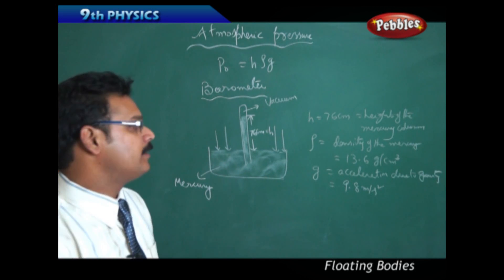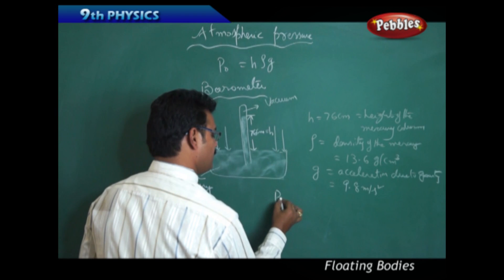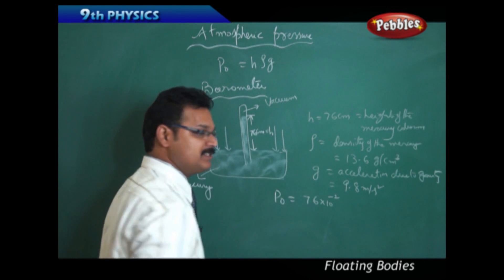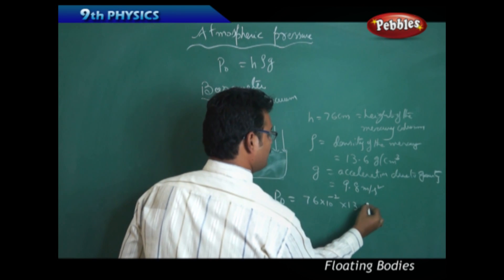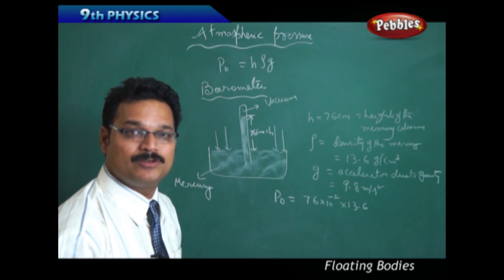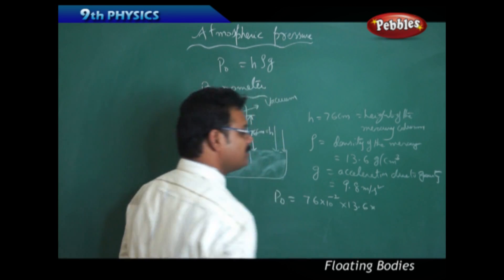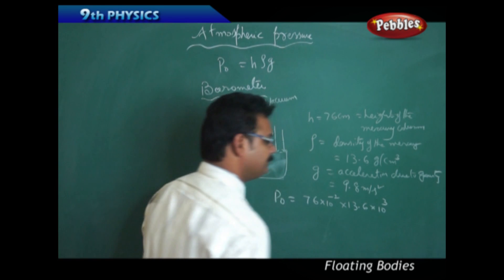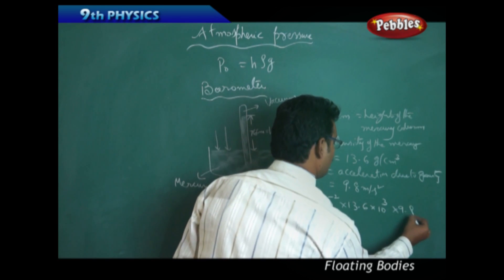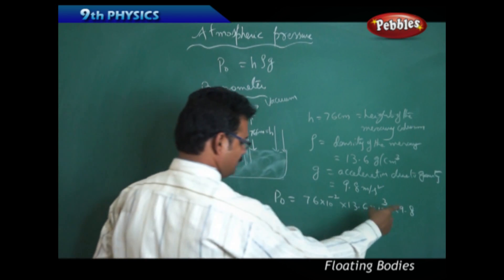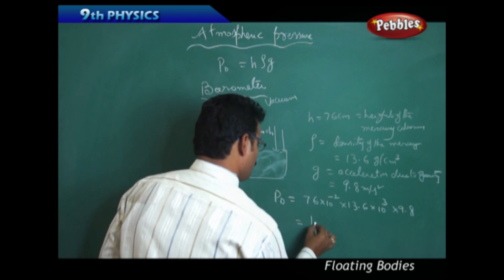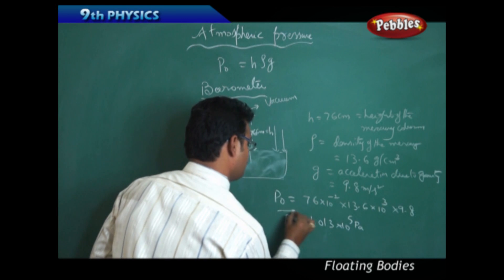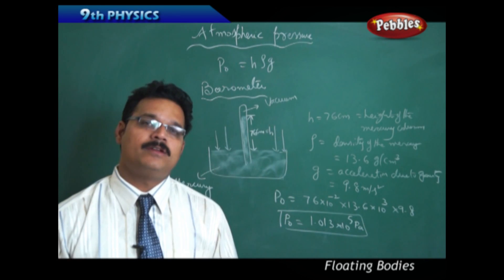G, the acceleration due to gravity, is 9.8 meters per second squared. Now, finding atmospheric pressure: P₀ equals H rho G. H is 76 centimeters converted to meters (76 × 10⁻²), density is 13.6 g/cm³ converted to kg/m³ (multiply by 1000), and G is 9.8. Calculating this gives P₀ equals 1.013 × 10⁵ Pascals — the atmospheric pressure at sea level.